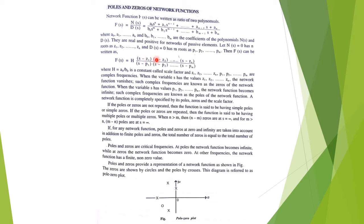Here z1 to zn are called zeros and p1 to pm are called poles. Poles and zeros are called critical frequencies. At poles, the network function becomes infinite — if we put s = p1, p2, or pm, F(s) becomes infinite. Similarly, zeros are the critical frequencies at which the network function becomes zero. If we put s = z1, z2, or zn, F(s) will vanish or become equal to zero.